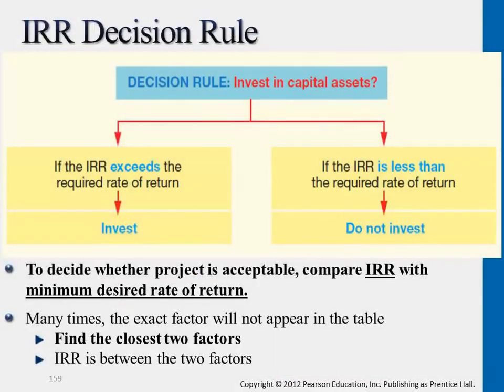To sum up: the decision rule is to compare the IRR against whatever rate the company's desired return is set at.